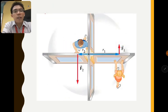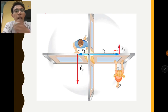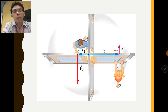Here's an example you might have seen in an airport. A girl is trying to push a door from the outside near the far edge of the door, so the moment caused by this girl is F1 times r1 — they are perpendicular. And the moment caused by the guy on the other side is F2 times r2.